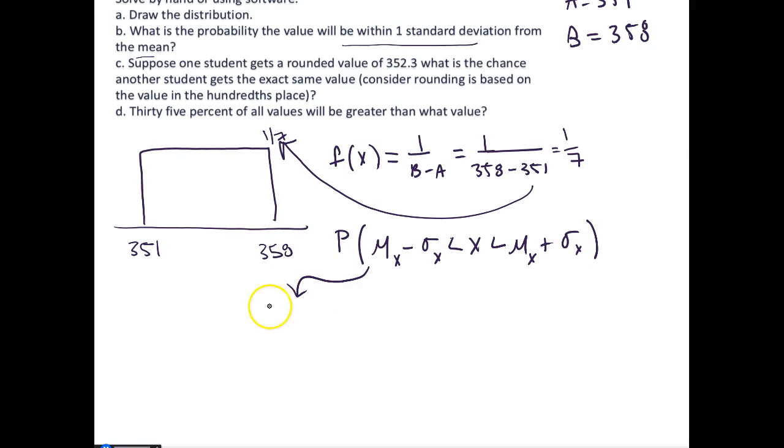The expectation of a uniform random variable is (a + b) / 2. Again, a is 351 plus 358 is b, and we divide this by 2, and we will get an average value of 354.5.